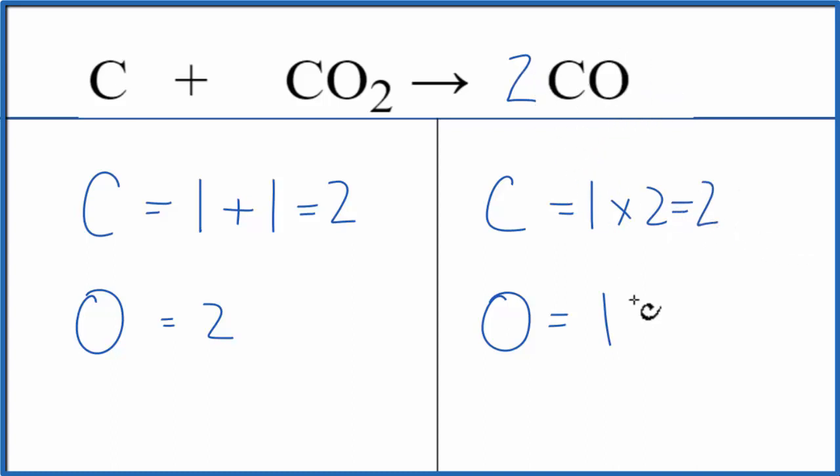Oxygen, one times the two, that'll give us two oxygens. And everything's the same on each side of the equation. That means this equation is balanced.